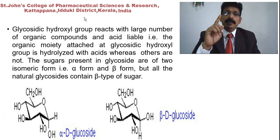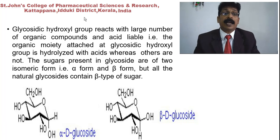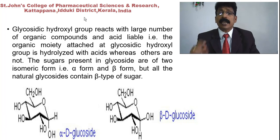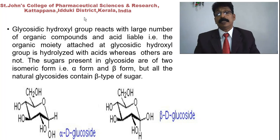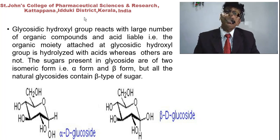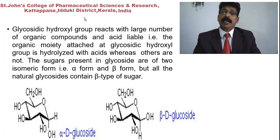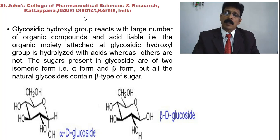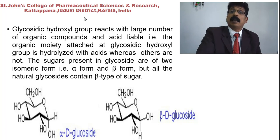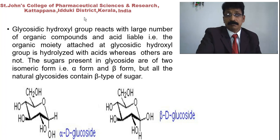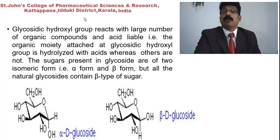Glycoside hydroxyl groups react with a large number of organic compounds and are acid labile — the organic moiety attached to the glycosidic hydroxyl group is hydrolyzed by acid. Sugars present in glycosides exist in two isomeric forms: alpha and beta. However, natural glycosides predominantly contain the beta type of sugars. The alpha or beta nature is due to the chirality of the carbon atom, giving optical isomerism.